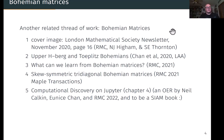Most recently, the thing that I'm most happy to announce is that our open educational resource with Neil Calkin and Eunice Chan, called Computational Discovery on Jupyter, is available online now. Chapter four has an introduction to Bohemian matrices. I'm very pleased to announce we've been offered a contract by SIAM. So the print version and the online version are going to work together, we hope. Hopefully the book will be out by next year.